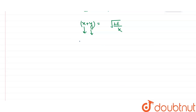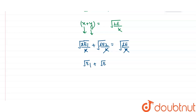Substituting: x = √(2E1/k) and y = √(2E2/k), and x + y = √(2E/k). The 2 and k cancel out since they are common to all three terms. So we get: √E1 + √E2 = √E. This is the relationship between the potential energies: E1 is the potential energy at displacement x, E2 at displacement y, and E at displacement x + y.